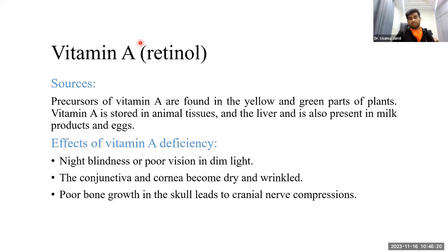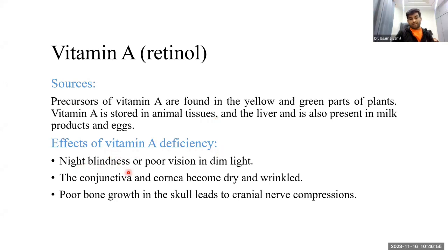Vitamin A is also called retinol, derived from 'retina,' which is part of the eye. Sources include yellow and green plant foods, and it is stored in the liver, as well as being present in milk products and eggs. Vitamin A deficiency can lead to night blindness, poor vision in dim light, and dryness of the conjunctiva and cornea — the eyes become dry and wrinkled, causing discomfort and pain.